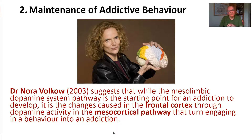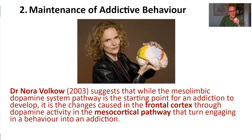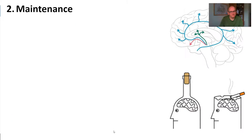However, researcher Nora Volkow looked at this and said that's a bit too simplistic. If you stop the behavior, you won't get the sense of euphoria, but why do addicts still want to engage in addictive behavior even when it's stopped being pleasurable? She said it's because dopamine also influences the frontal cortex through the mesocortical pathway, and this is why the addiction is maintained.